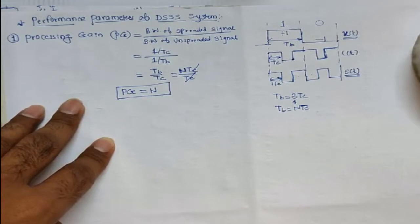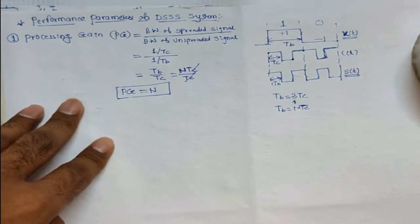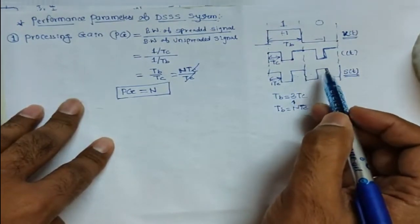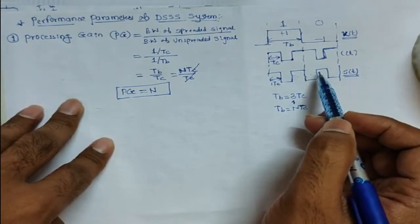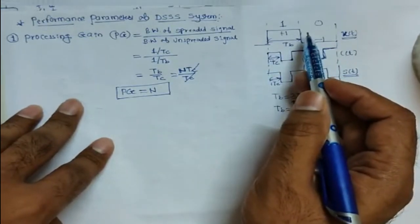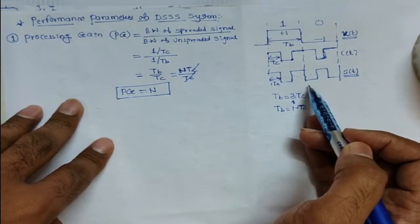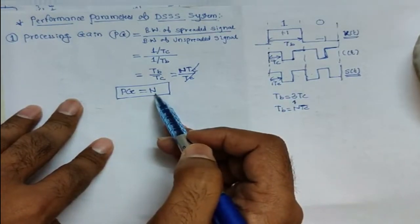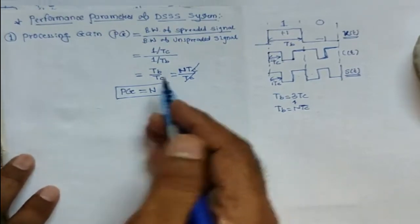The processing gain represents the gain achieved by processing the spread spectrum signal over the unspreaded signal. Whatever spreaded signals we are getting, some amount of gain is required to convert the unspreaded signal into the spreaded signal, and that amount of gain is N. Now let us move on to the next parameter of the DSSS system.